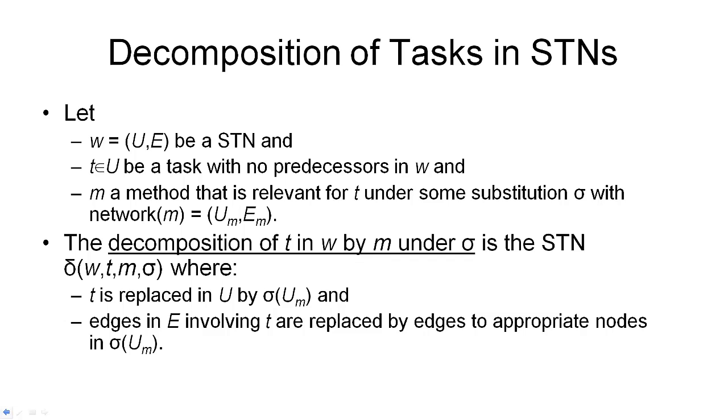Now that we understand how to decompose a single task in isolation, we will look at how to decompose tasks that are in a task network. So we start with the task network W, consisting of nodes and edges where the nodes are tasks and the edges are ordering constraints. And we want to decompose one of the tasks T that is in this network. And this must be a task that has no predecessors in W. Then we want to decompose this task using a method. And this method, of course, has to be relevant for the task under some substitution sigma.